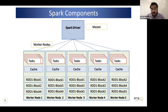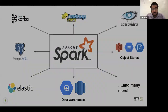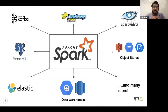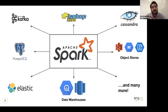Spark is really powerful because you can connect to any sort of big or small data source in the current marketplace. Starting at the top left of the screen — Kafka is a messaging system that allows communication between two different applications, supporting live streaming such as stock prices.